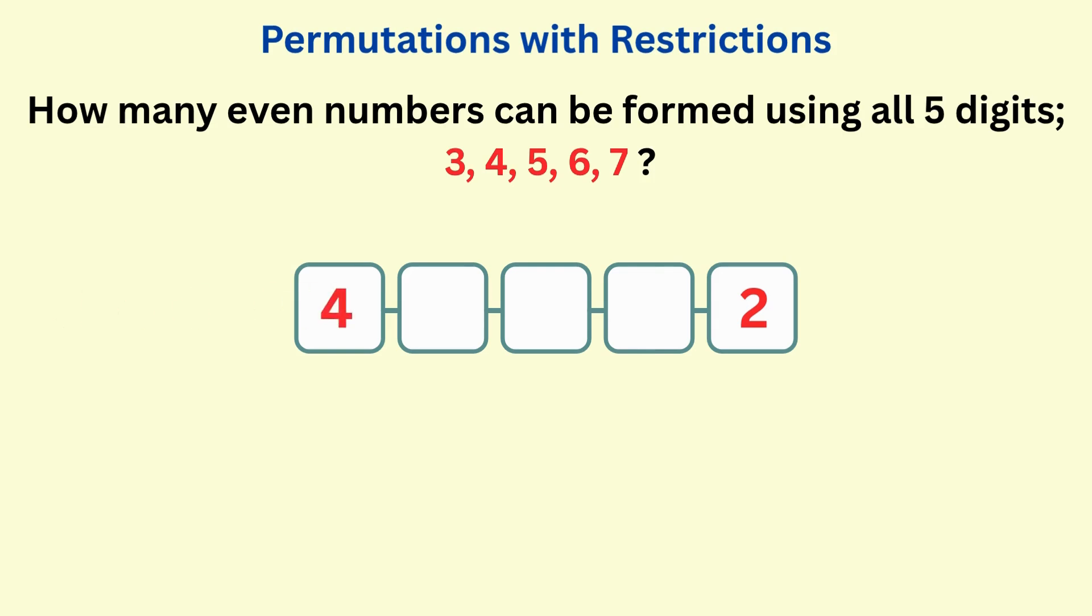So now two digits are placed, which leaves us with three choices for the next box. For the other box, we have two choices, and then only one choice for the last box. To get the number of even numbers, we multiply the values in the boxes to get 48 even numbers.